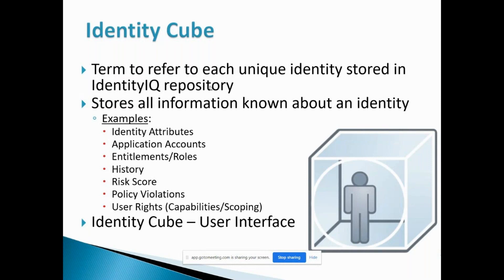Those are the attributes available with the user. Along with that, the user has application accesses, entitlement accesses, and previous history — for example, previously the user didn't have a particular application access but now they do. All the details surrounding the user — that whole thing is called the Identity Cube. The identity is available and inside the cube all the identity attributes are available. The Identity Cube also accesses the user interface.